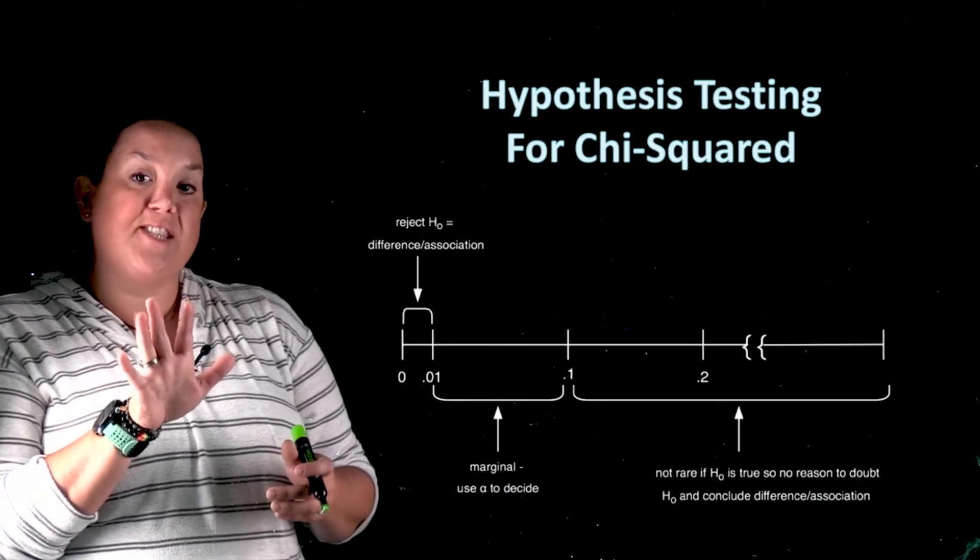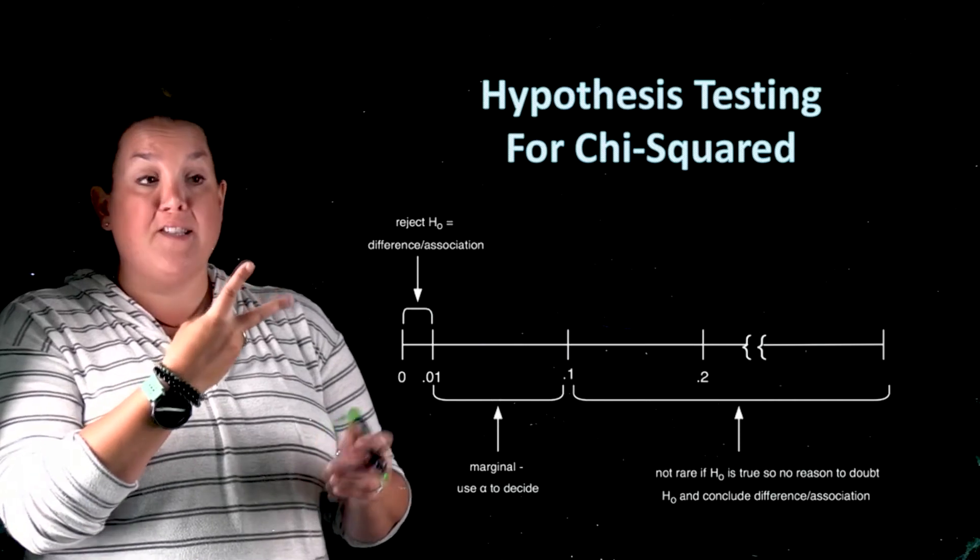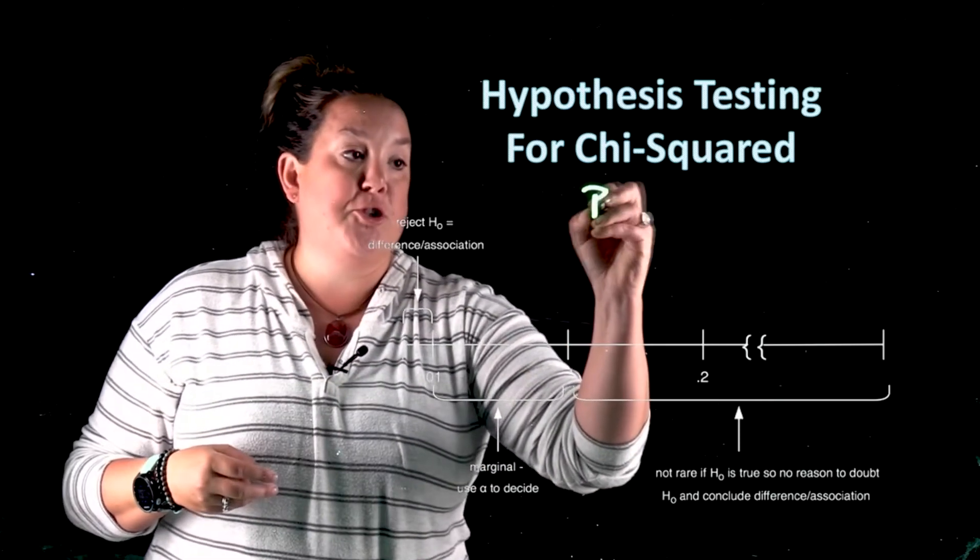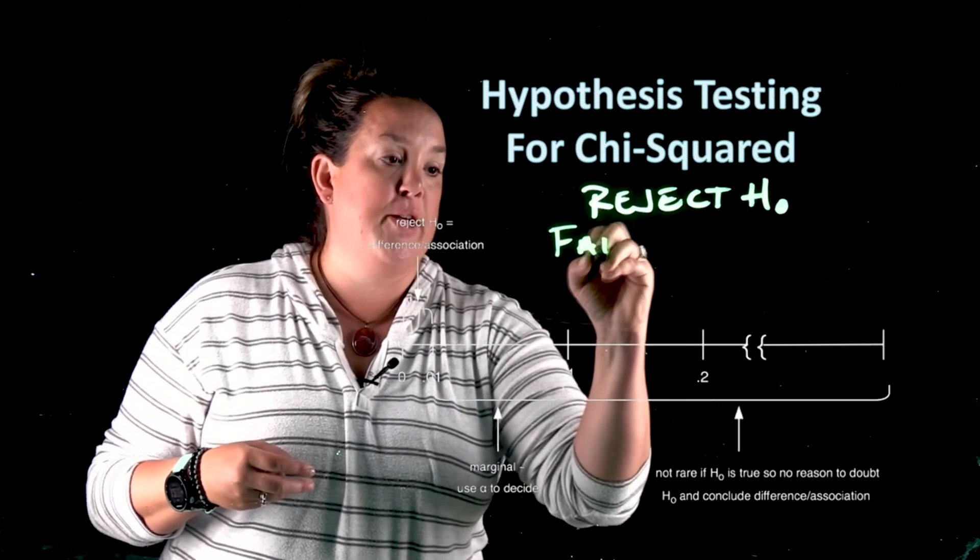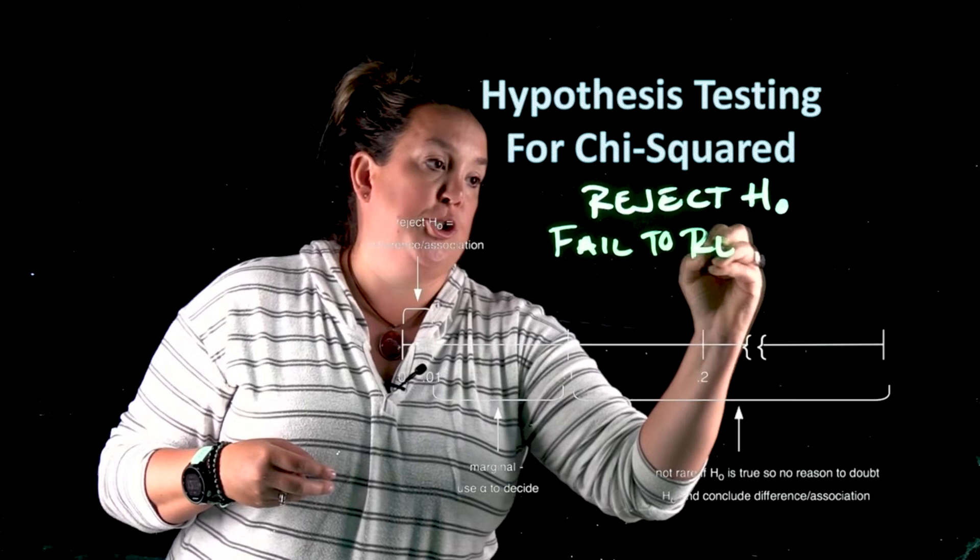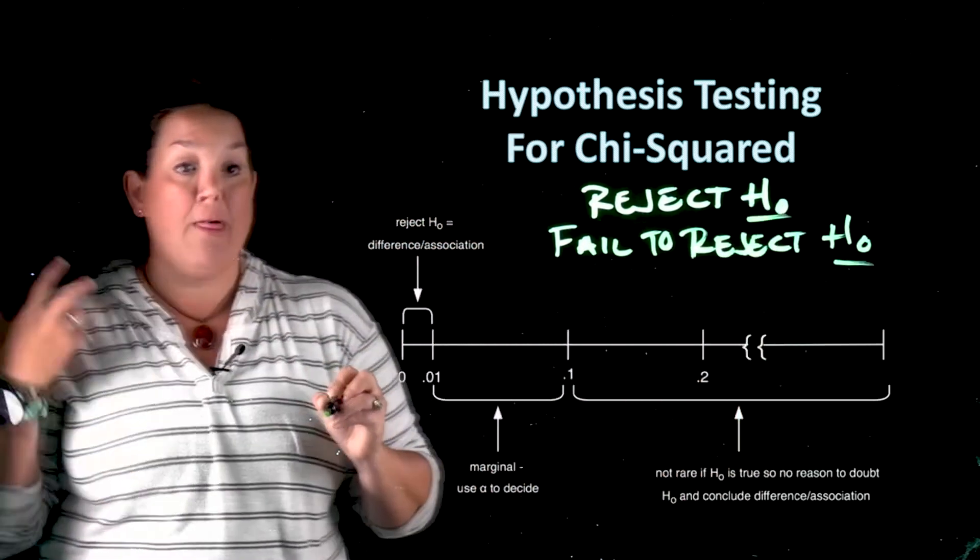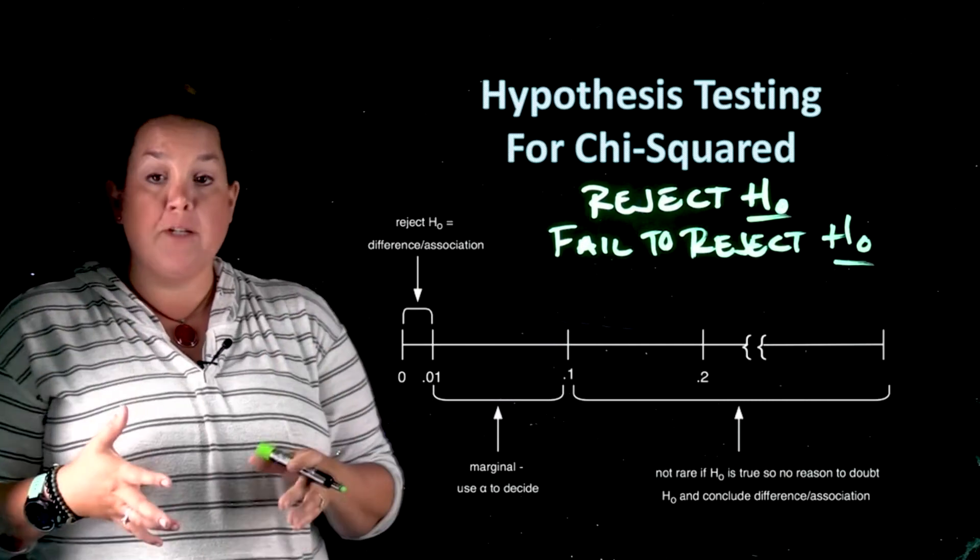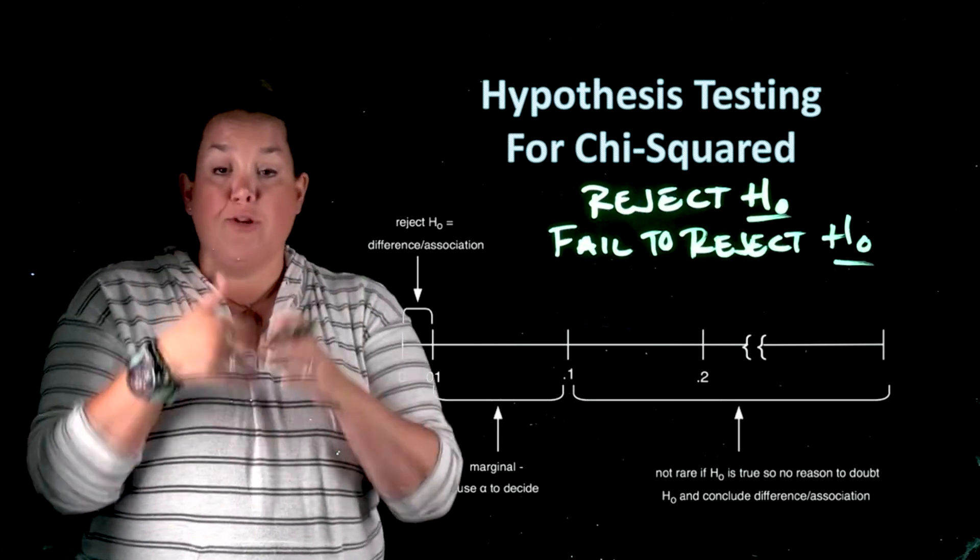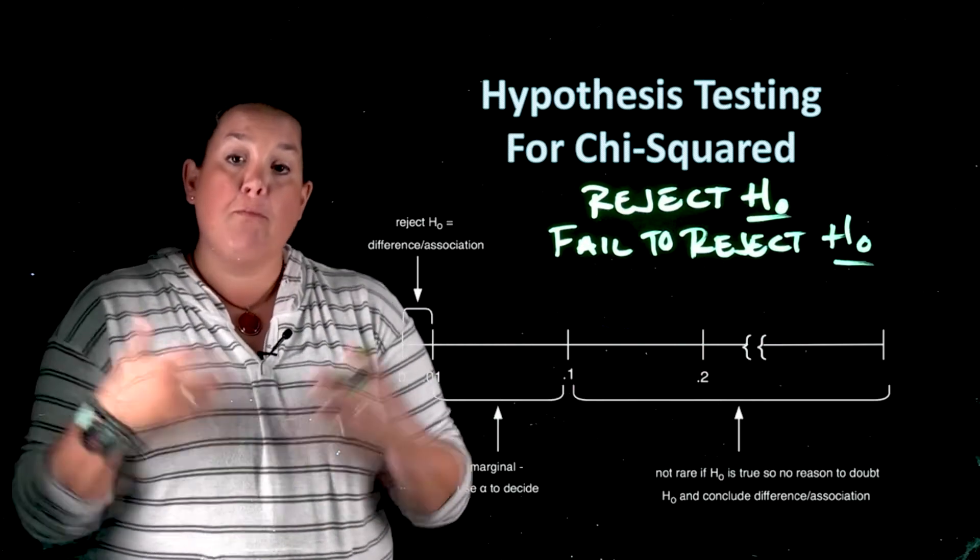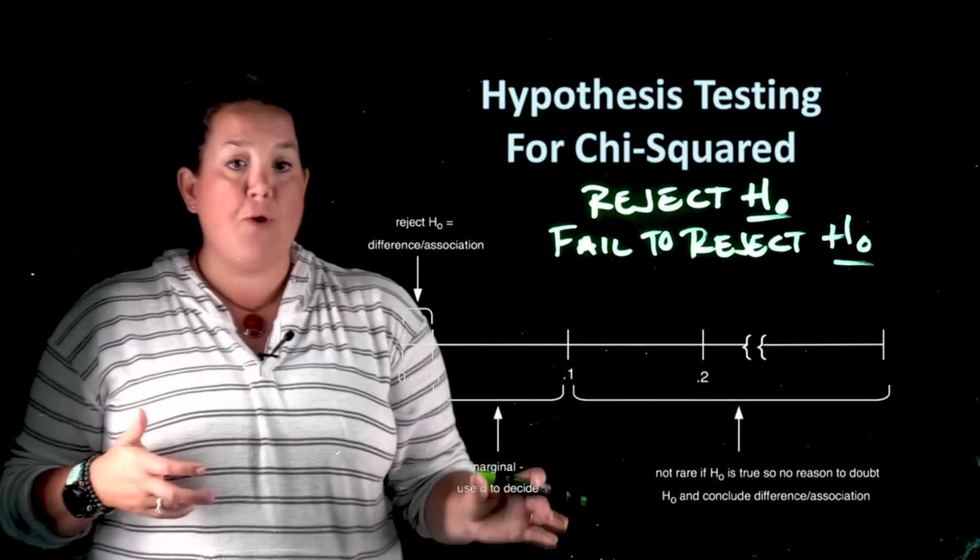So when we do a hypothesis test, we have two options. Just like there's two hypotheses, we have two possible decisions. One is to reject the null and the other is failing to reject the null. So notice we're making a decision on the null. When we find a p-value, we're seeing how much evidence we have for what we found or something more extreme. And remember, the more extreme is in favor of the alternative or more of a relationship. So these are the two options.